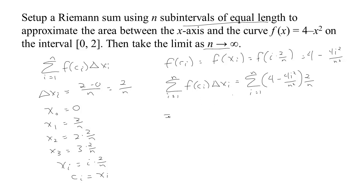We're talking here about taking the sum from i equals 1 to n. If I distribute, that would be 8 over n minus 8i² over n³.